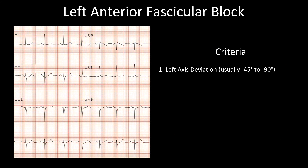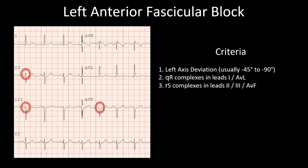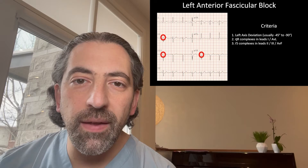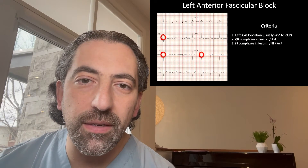The actual criteria for left anterior fascicle block is left axis deviation, usually extreme between minus 45 degrees to minus 90 degrees. There is a small Q and a large R complex in leads 1 and AVL, and there is a small R and large S complex in leads 2, 3, and AVF. This small R wave in leads 2, 3, and AVF is generated by the initial depolarization through the left posterior fascicle.